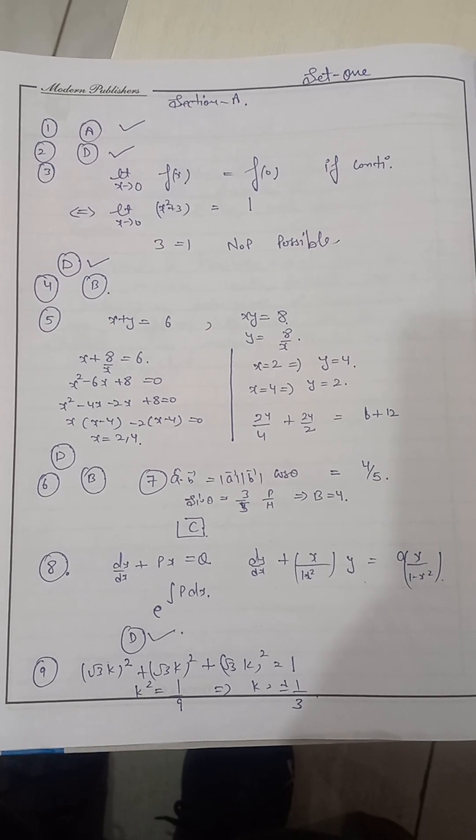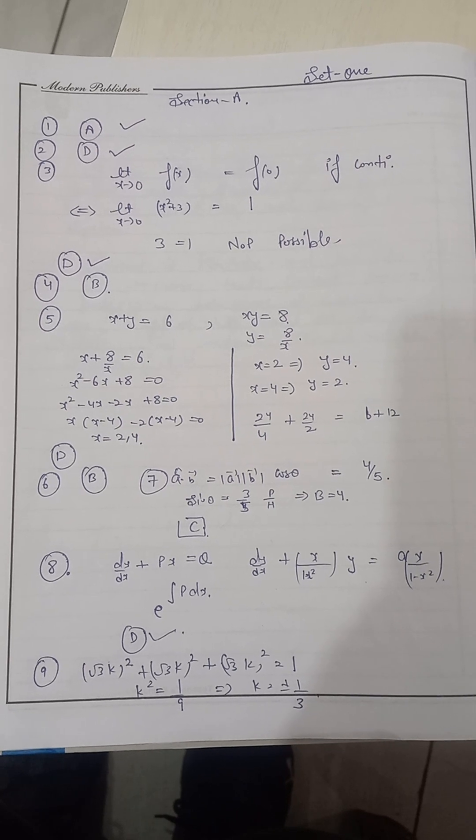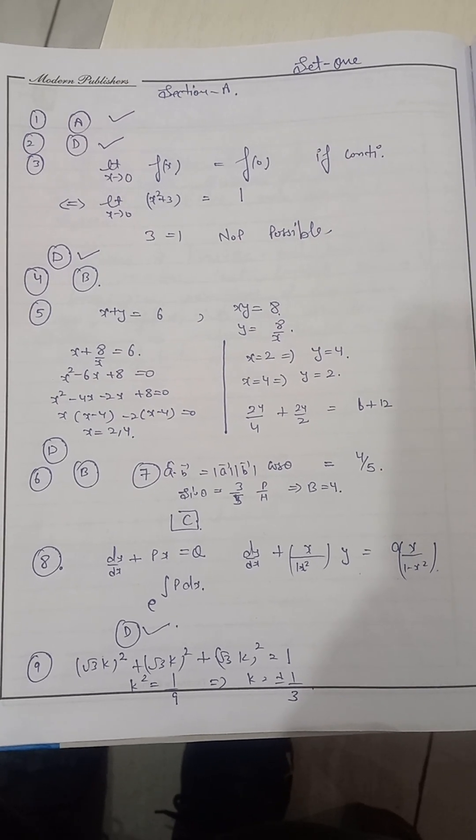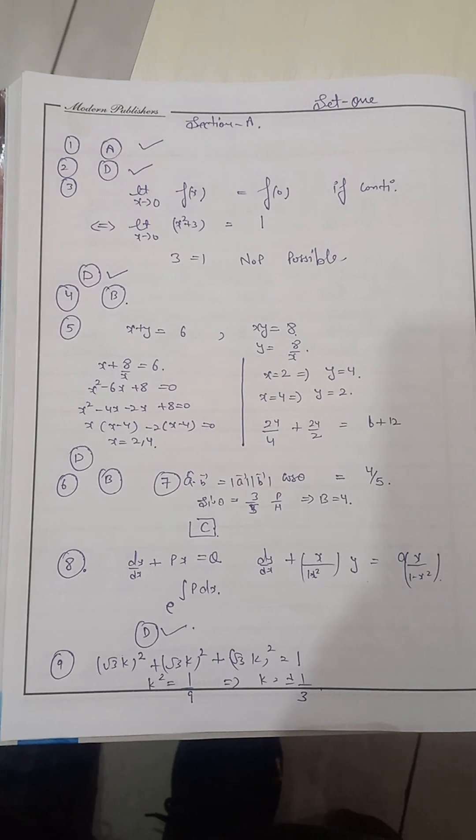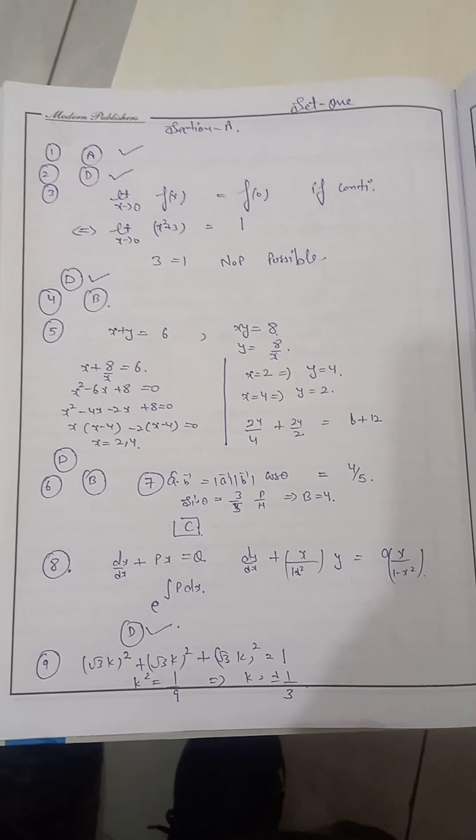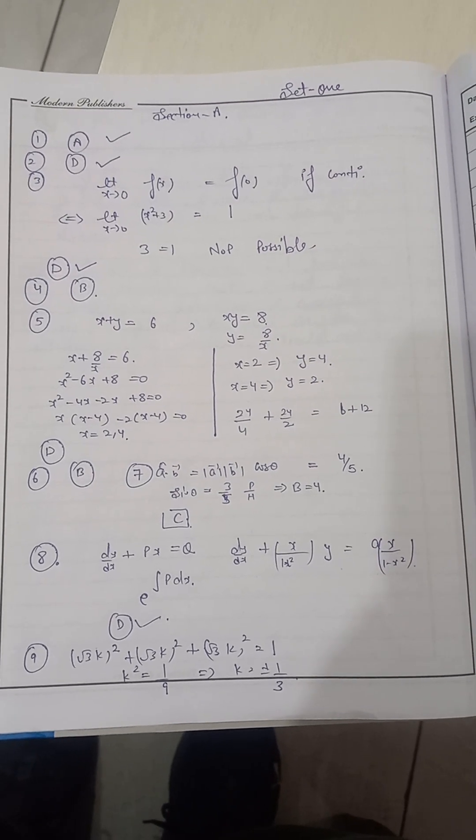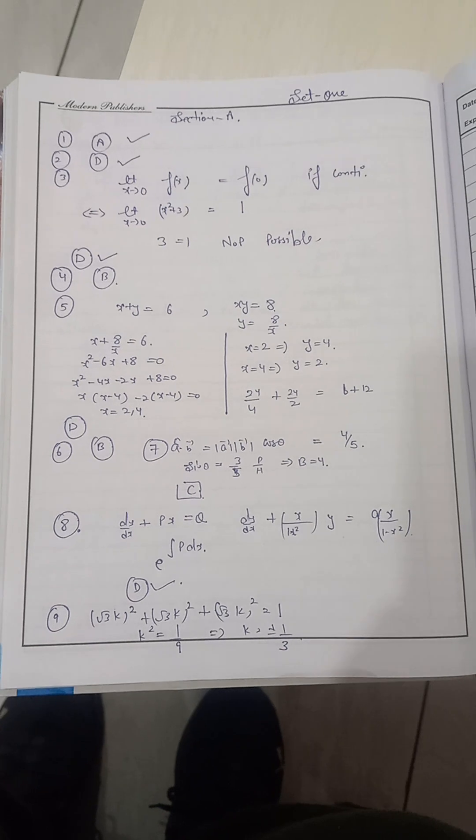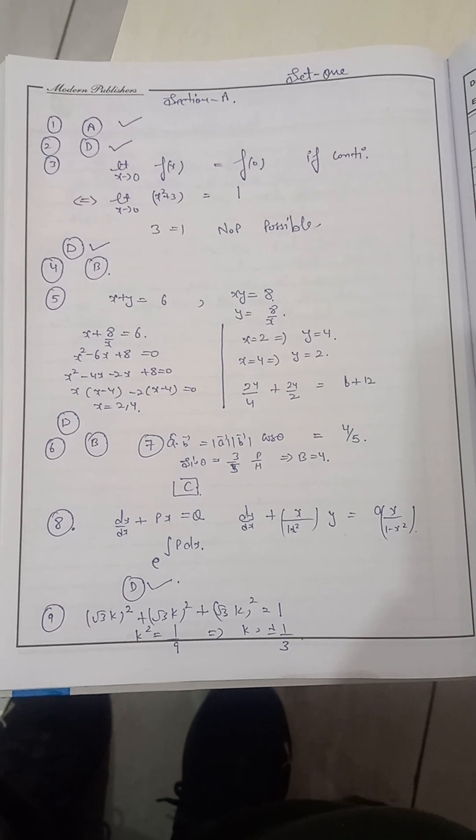6th question directly we can easily see, its answer is B. 7th C, 8th question D and what about 9th? So 9th question and its answer you may see that K's value is plus minus 1 by 3. You may check your option, either it is correct or incorrect. Let us move on the next.